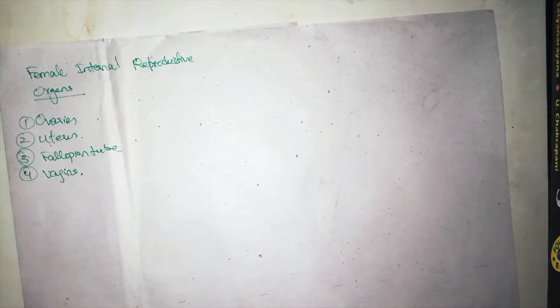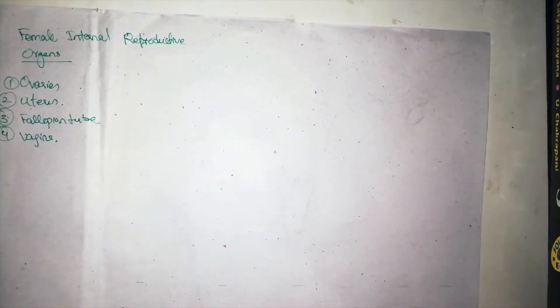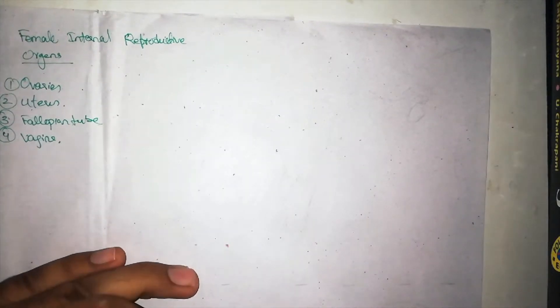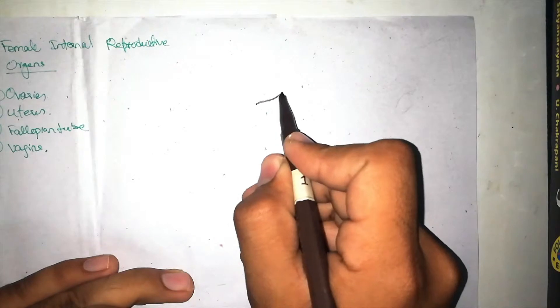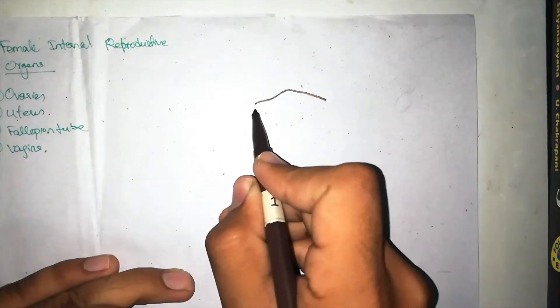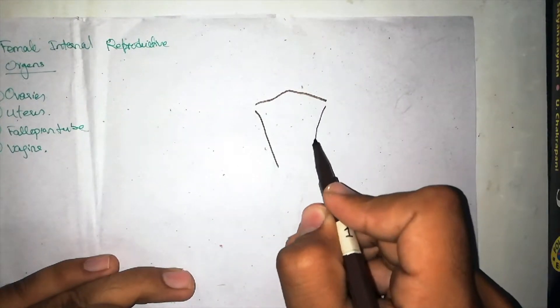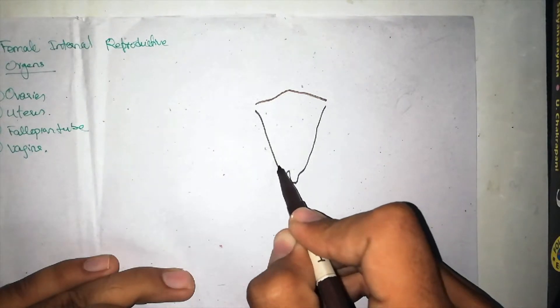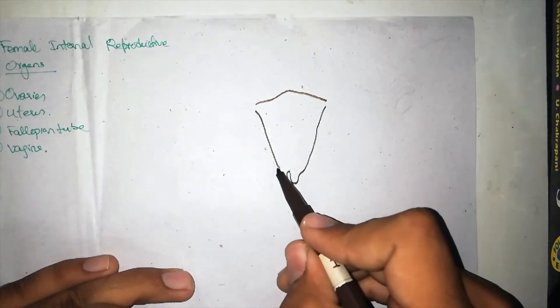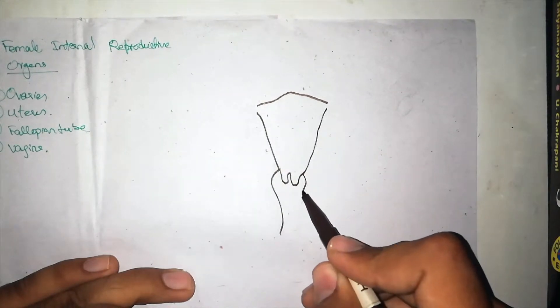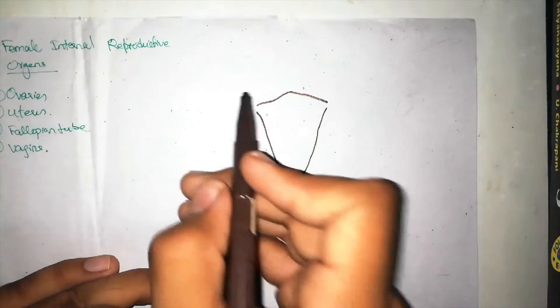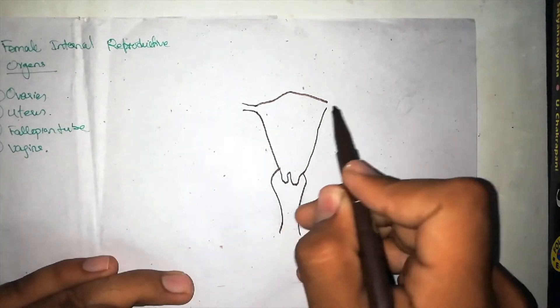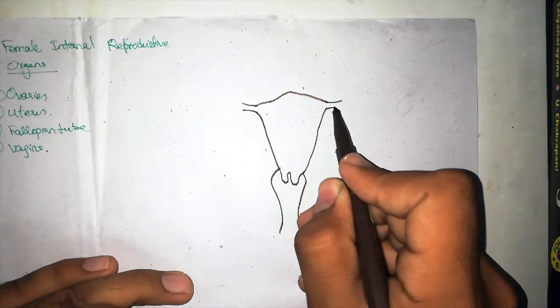I'm going to teach you the anatomy using two different diagrams. First I'll show you the basic layout of these female reproductive organs. If I draw out the uterus — this would be the uterus. The part I'm drawing here is actually the cervix; the cervix is actually inside the vagina. From the uterus there are two uterine tubes, or fallopian tubes, arising on each side.